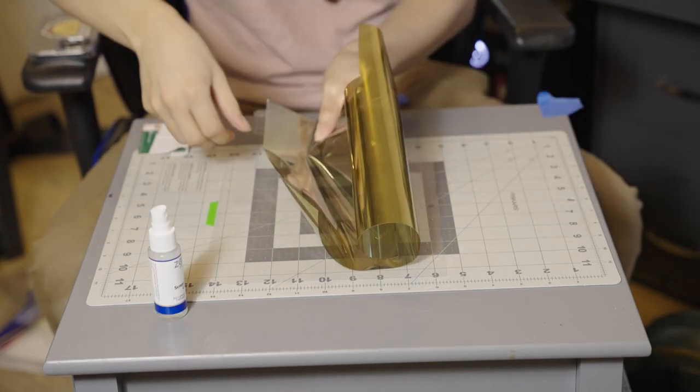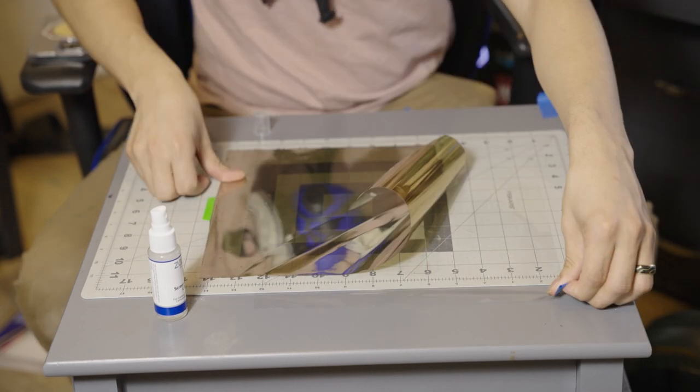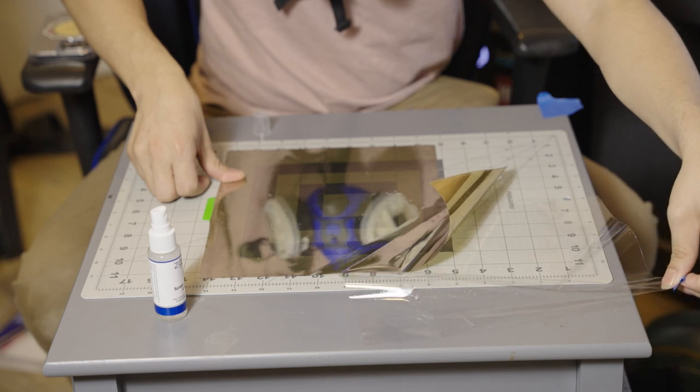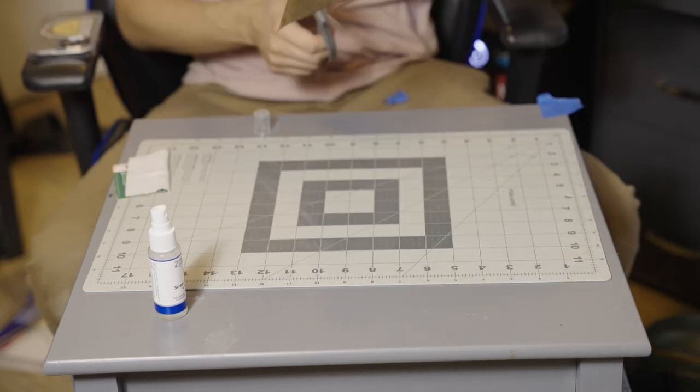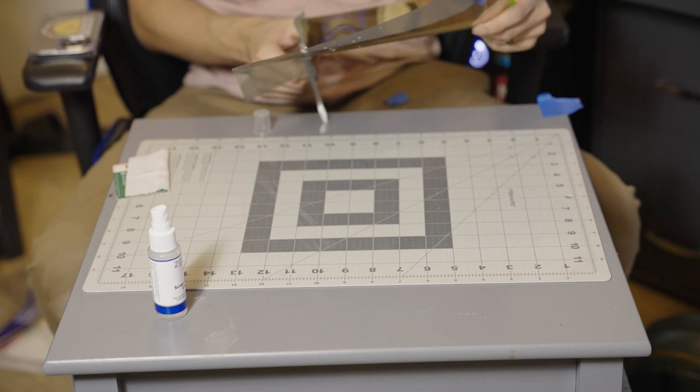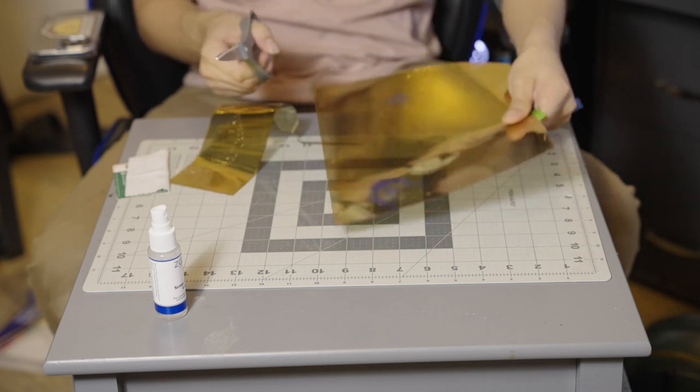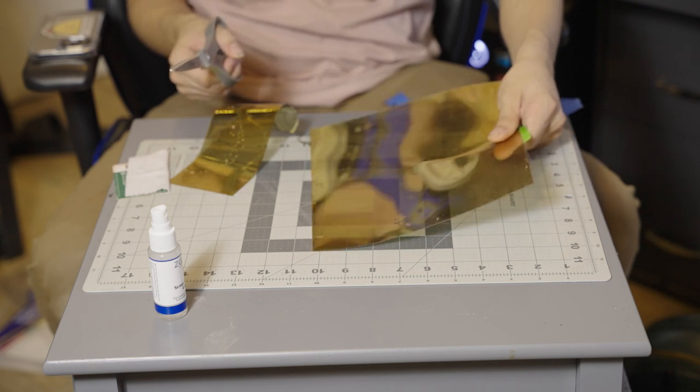After that, just spray the water soap solution throughout the divider and apply the mirror to it. This will make it so it doesn't stick right away and you're still able to move around the film and squeeze any of the water through with squeegee. Once I had that done I just cut off the excess, which was just a little bit left from the last visor I cut out.